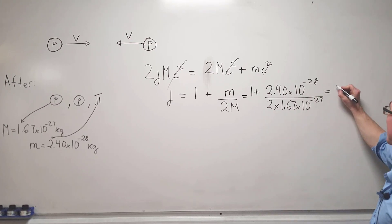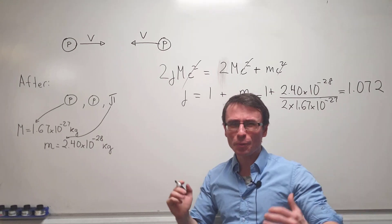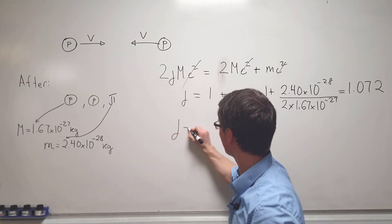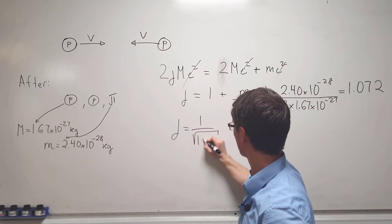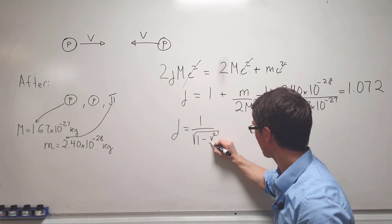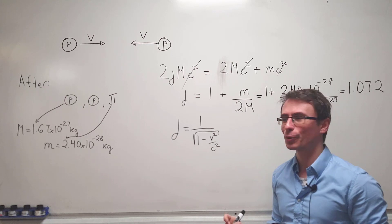We're going to have a gamma factor of 1.072. Now remember, in the theory of relativity, the gamma factor is defined as 1 over the square root of 1 minus v² over c², where c is the speed of light.